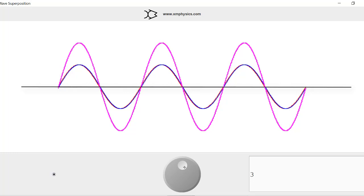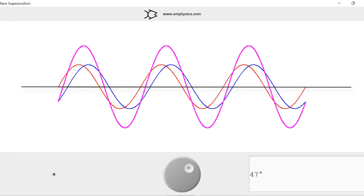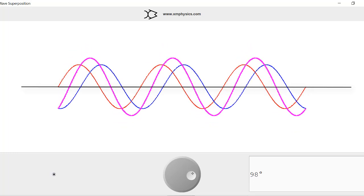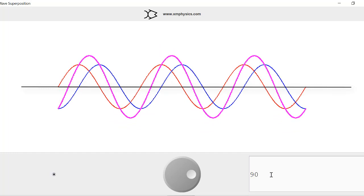Let's now increase the phase difference between them to about 90 degrees. So these two waves are now misaligned by a quarter of a cycle. And the resultant wave from the superposition is this one.